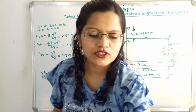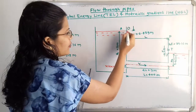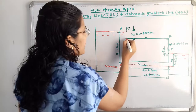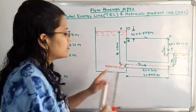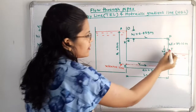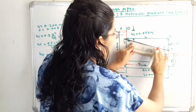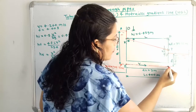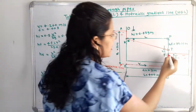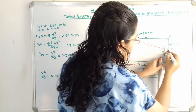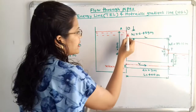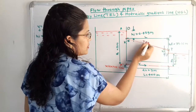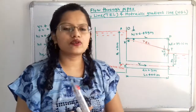To draw the total energy line: the total energy at point A is at point D; at point B (entrance) it is at point E; at point C it is at point I. We join these points — D, E, I, and J — and that gives the total energy line (TEL).